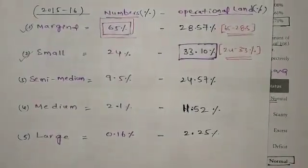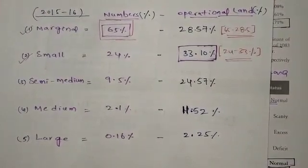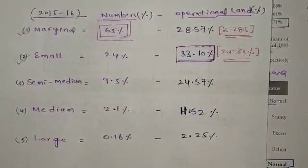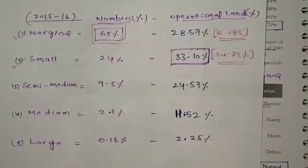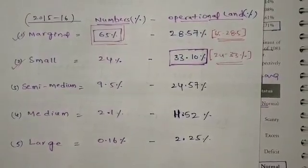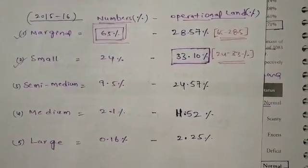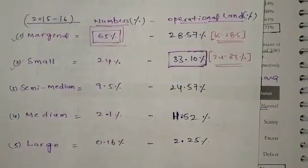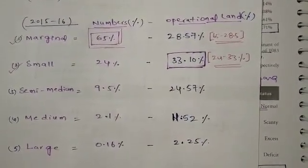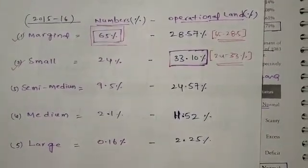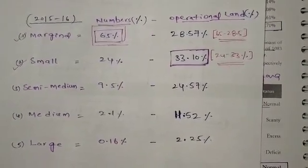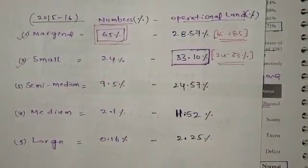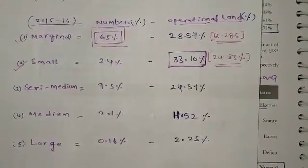In terms of land area: marginal farmers (65%) hold about 28% of the land, small farmers (24%) hold 33% of the land, semi-medium hold 24.5%, medium hold 11.5%, and large farmers hold 2.25%. The key figures for exam purposes are: marginal farmers 65%, small farmers 24%, semi-medium 9.5%, medium 2%, and large 1.6%.